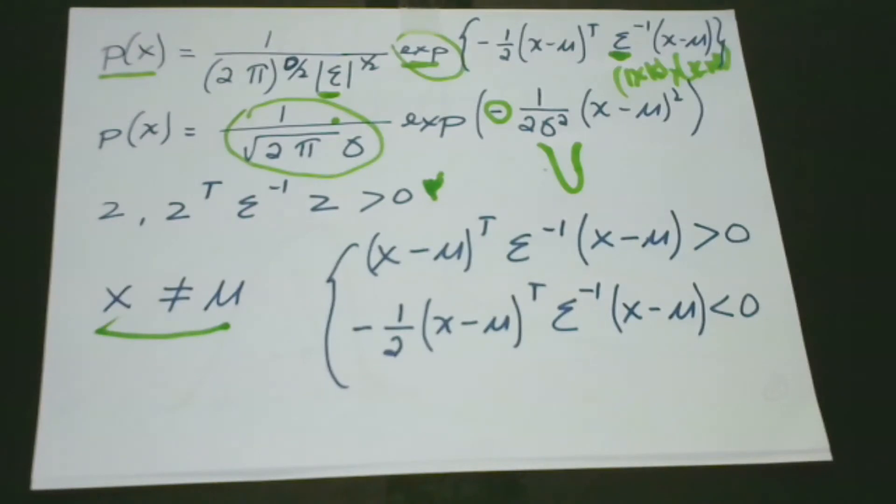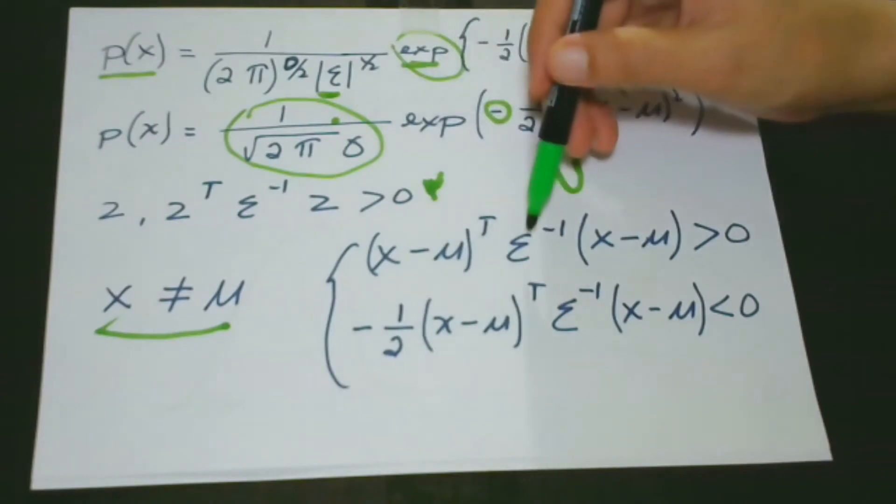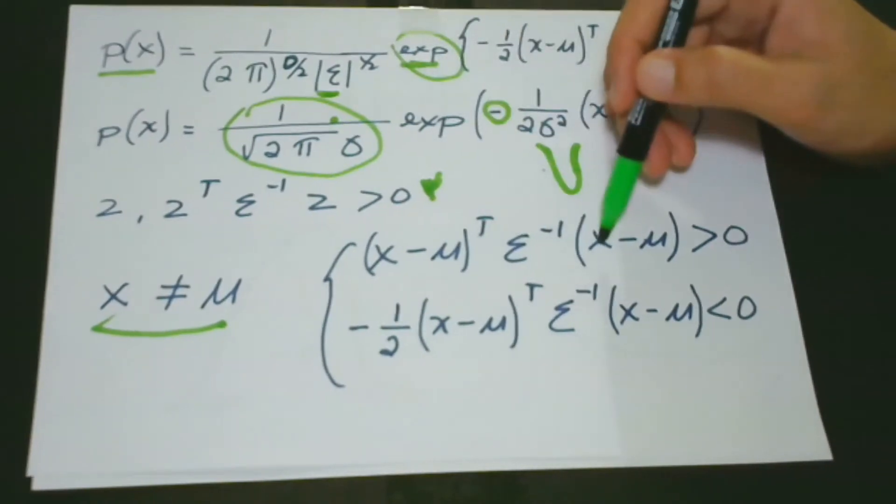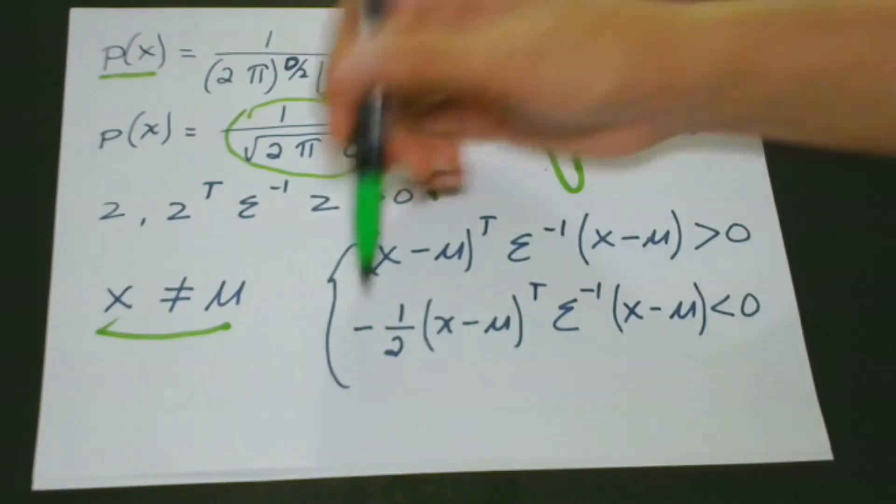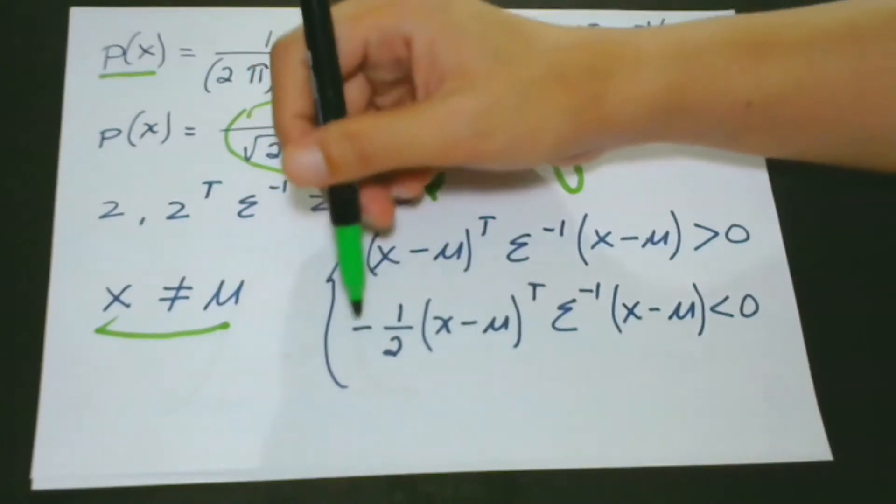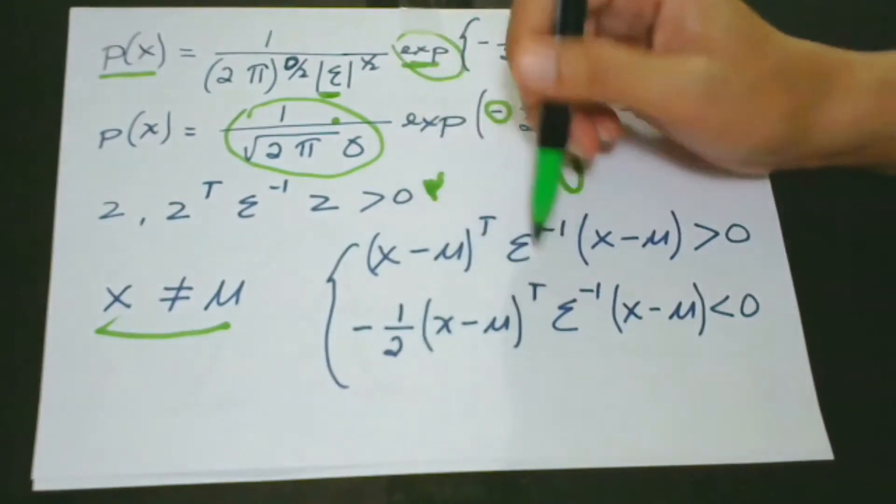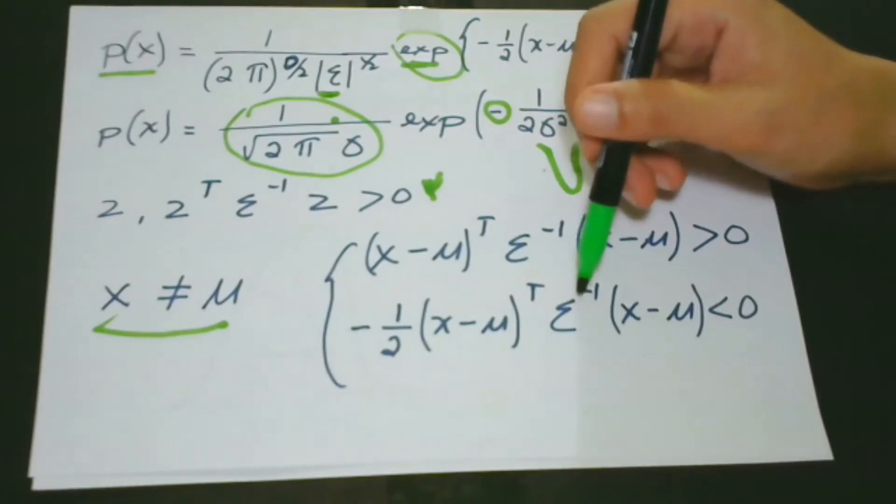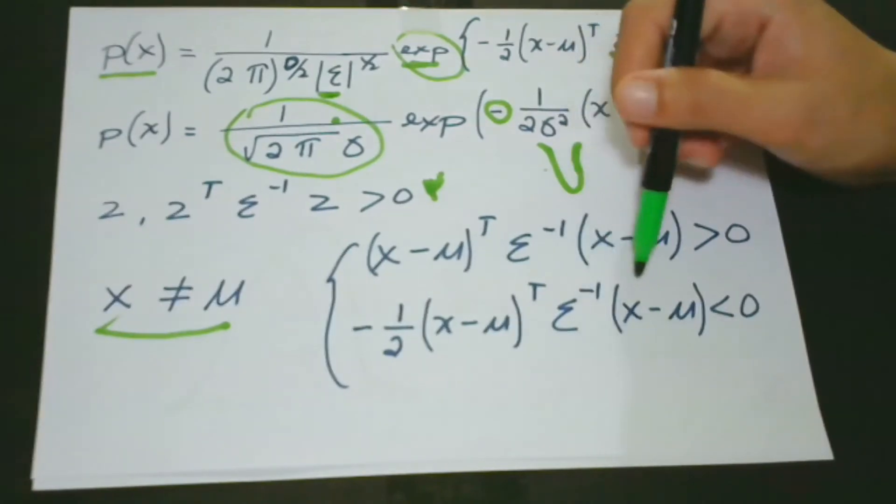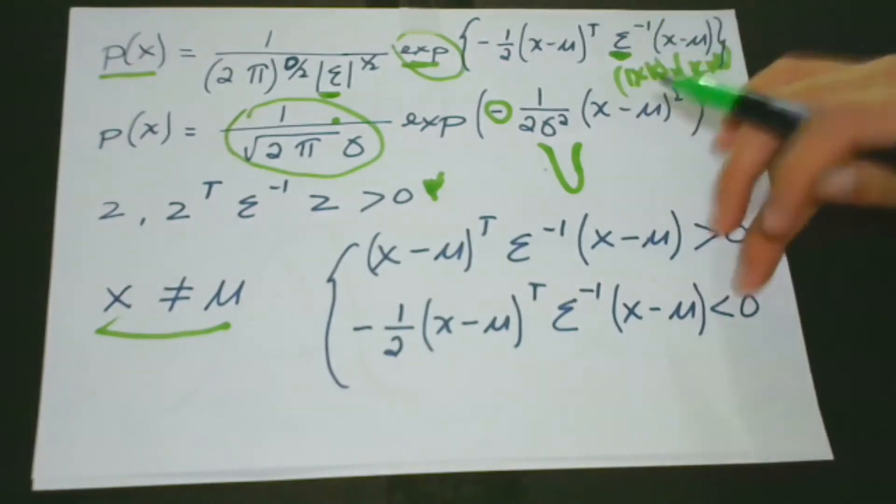this tells us that for any vector x is not equal to mu, then we have these two conditions. And these two conditions are, the first one is that x minus mu transpose, sigma negative 1 or the inverse, x minus mu is greater than 0. And here, the second situation is that negative 1 half, x minus mu, transpose, sigma or the covariance matrix, negative 1, x minus mu, then this is less than 0.